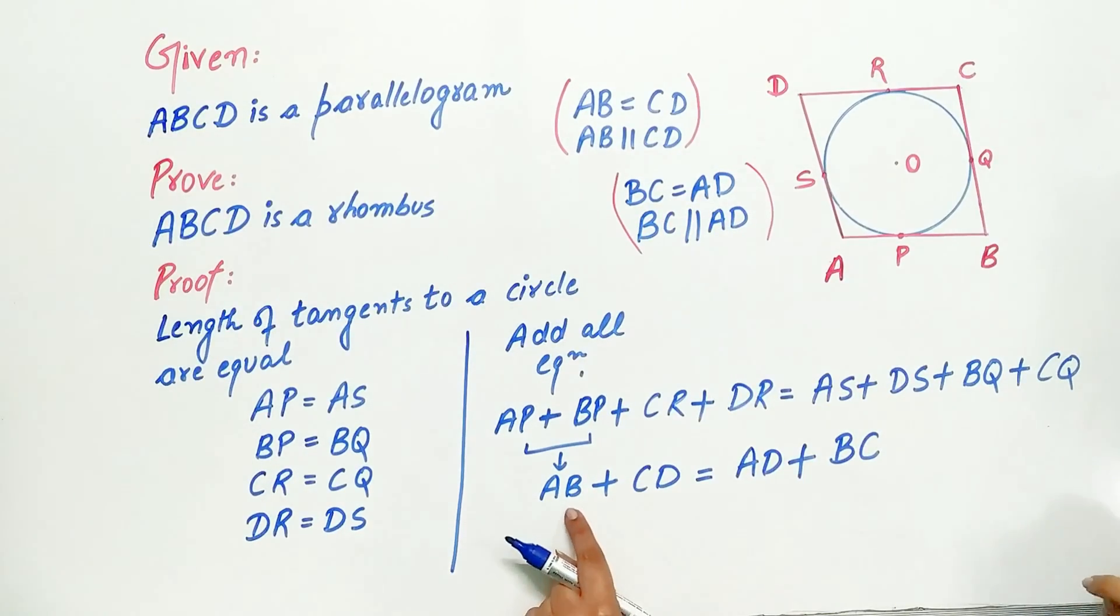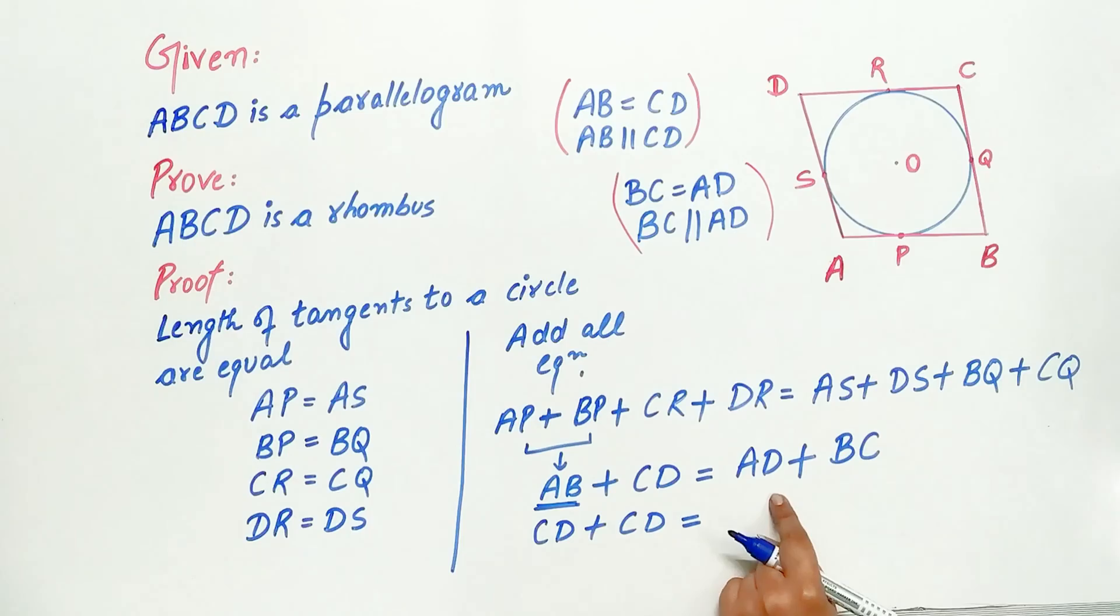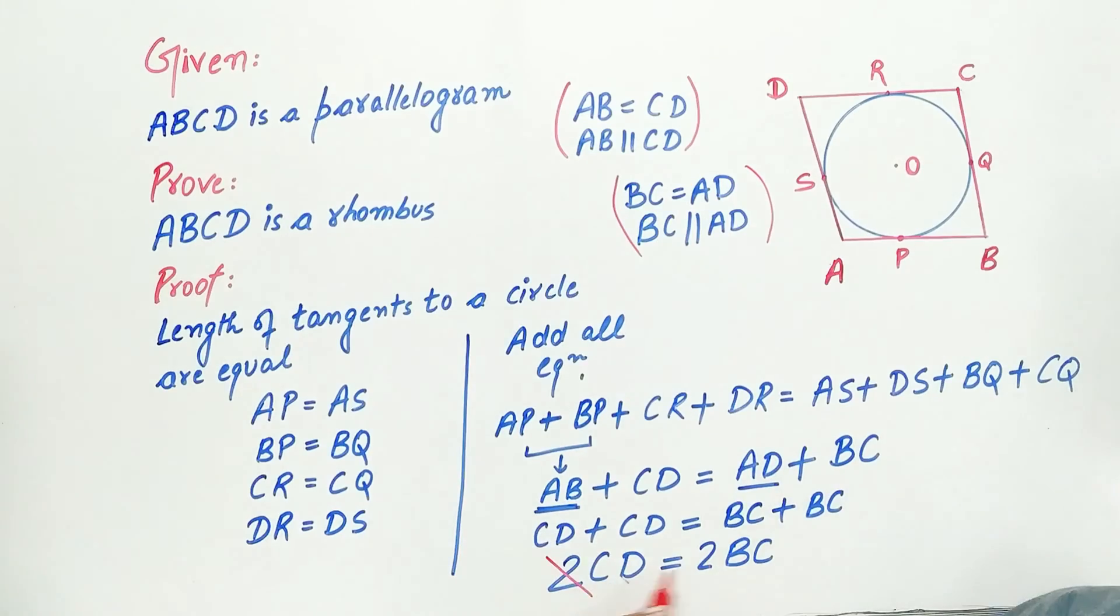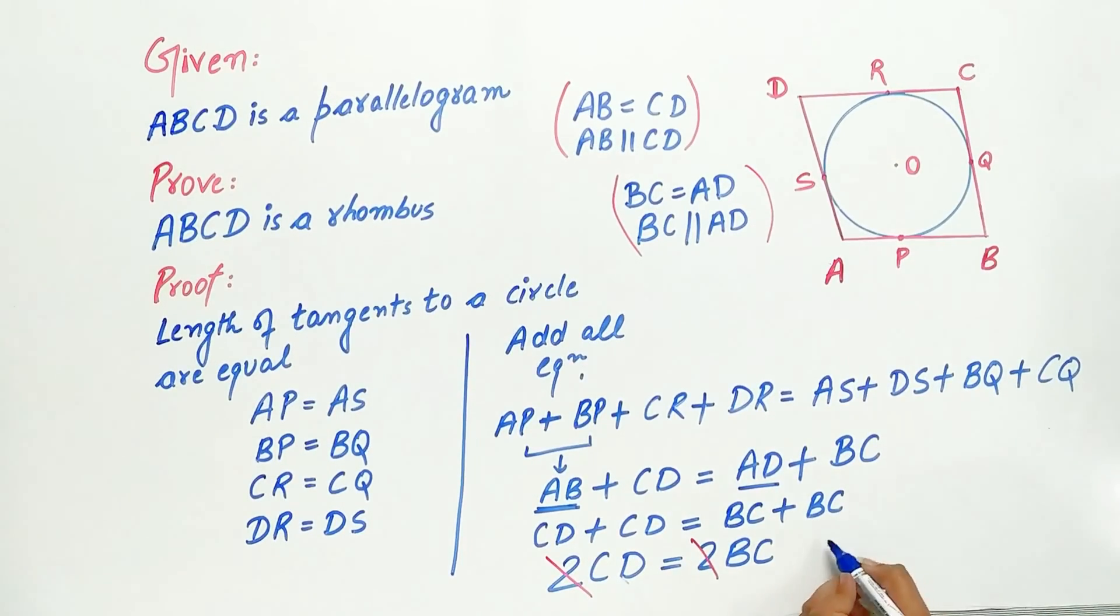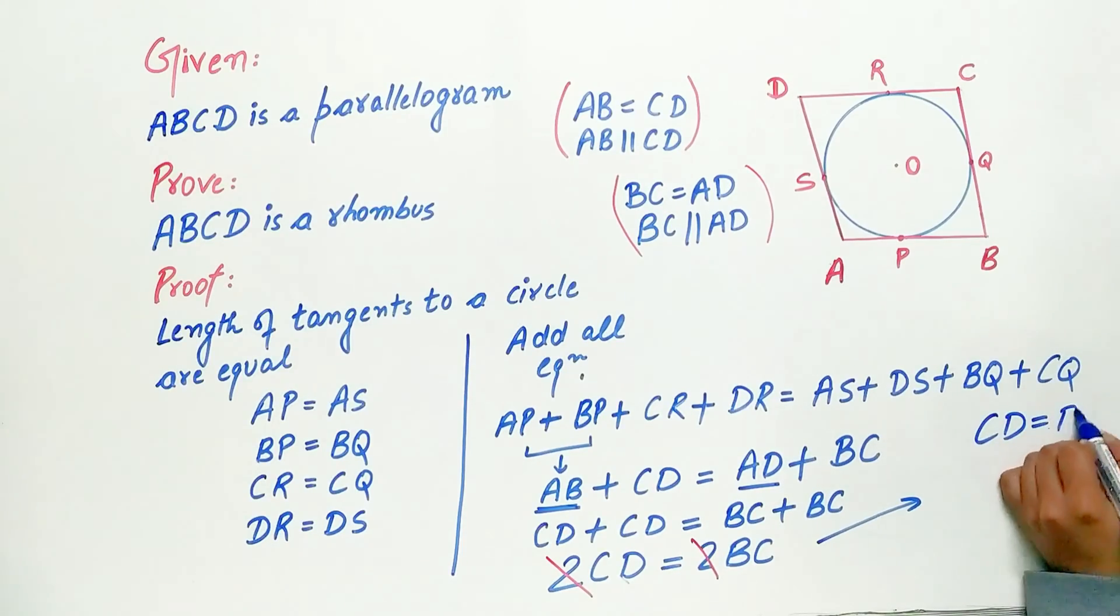So we'll substitute CD in place of AB. CD plus CD is equal to BC plus BC. Similarly, we will substitute BC in place of AD. CD plus CD is twice of CD and BC plus BC is twice of BC. Cancel 2. Hence, remaining is CD is equal to BC.